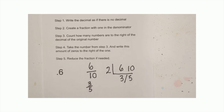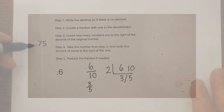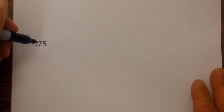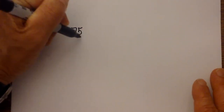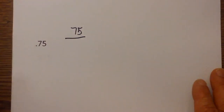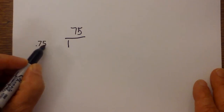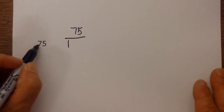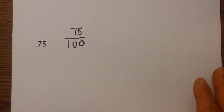So 0.6 becomes three fifths. Let's work a couple more examples. The first thing I do is create a fraction — I'm just going to write 75 and act as if there is no decimal there. I then write a one and count how many numbers are to the right of the decimal. I have one, two — so I just write two zeros.